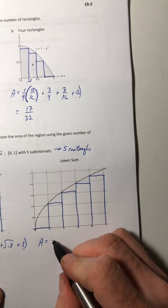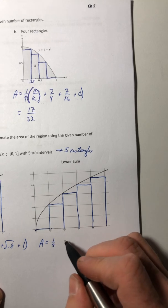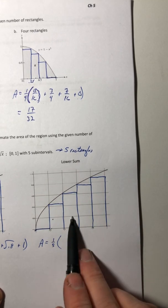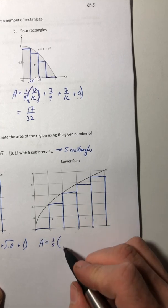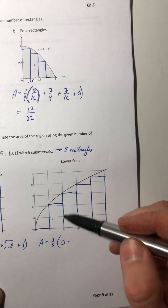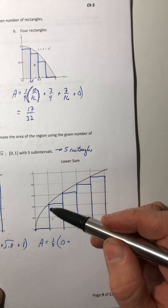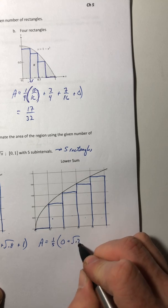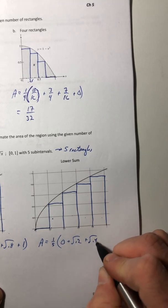And each rectangle has a base of a fifth. So again, I'm going to pull that out and then I'm just going to add up each height of the rectangle. So the first one, the height is zero. Second one, the height's given by when x is 0.2. So plug that in for x and then just keep going down the line.